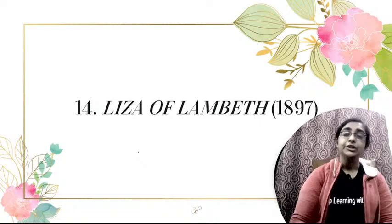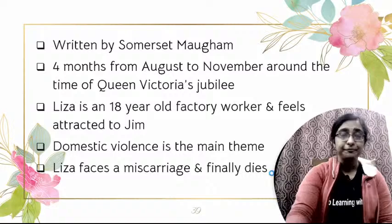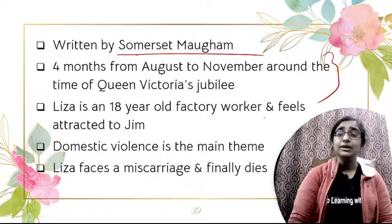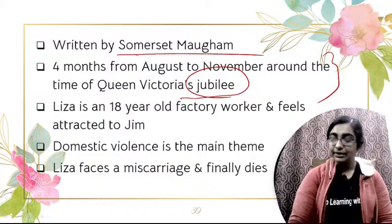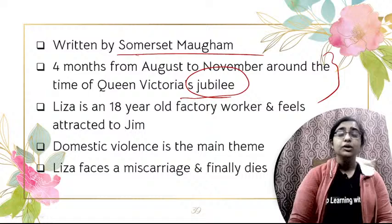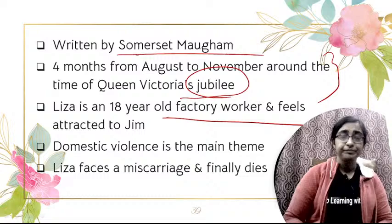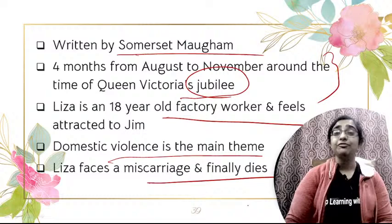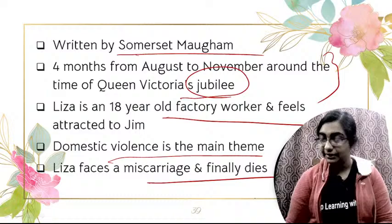Next is Liza of Lambeth, published in 1897, a novel by Somerset Maugham. It covers a four-month journey from August to November, around the time of Queen Victoria's Jubilee. Liza is an 18-year-old factory worker who feels attracted to Jim. The main theme is domestic violence — Liza is very much tortured by Jim. Liza faces a miscarriage and finally dies.